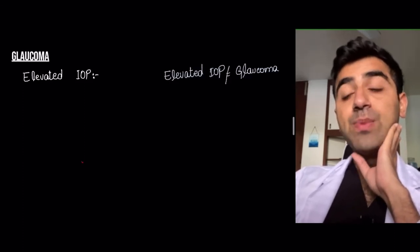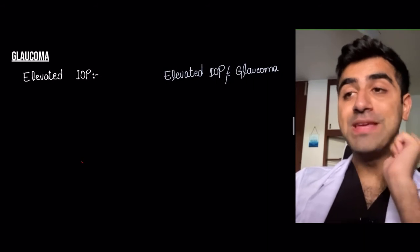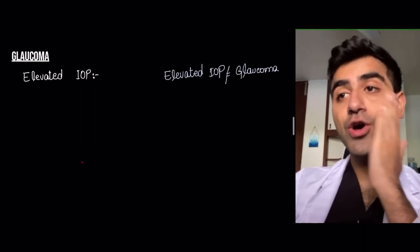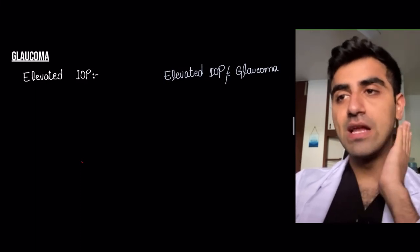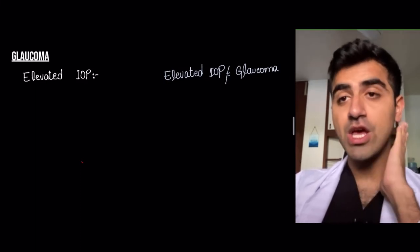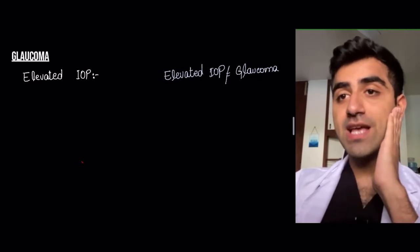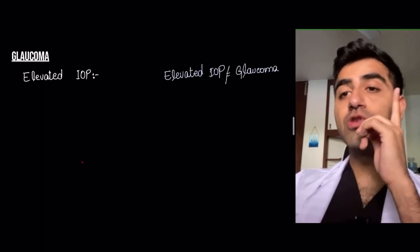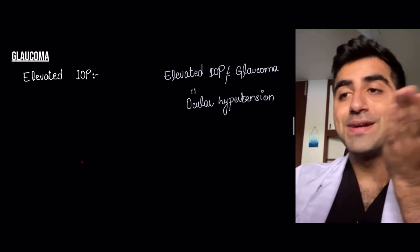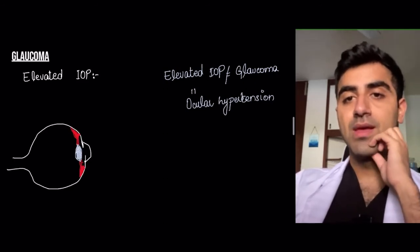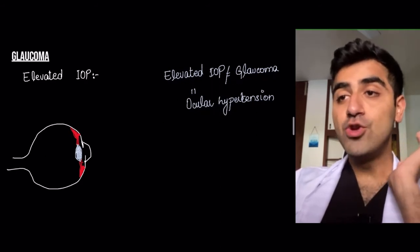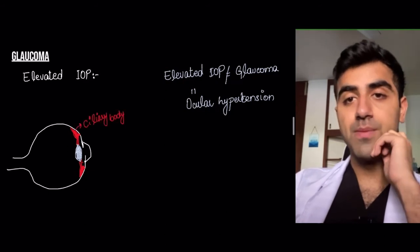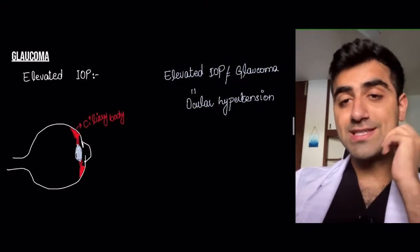Elevated IOP does not mean glaucoma. Glaucoma is an optic neuropathy. If there's elevated IOP without that optic neuropathy, we call it ocular hypertension, not glaucoma. As mentioned, in about 40% of people there will be normal pressure or low tension glaucoma.